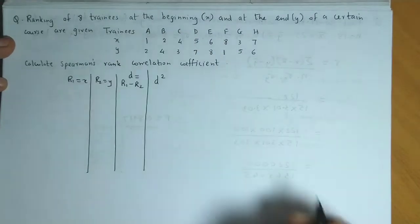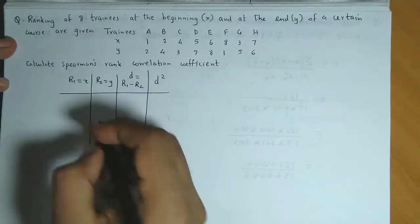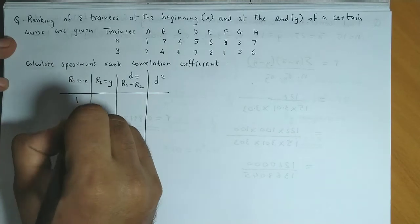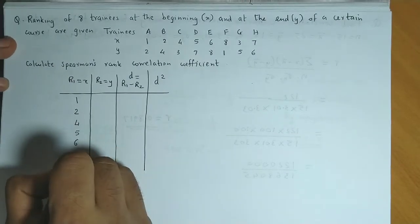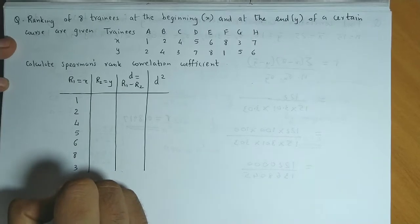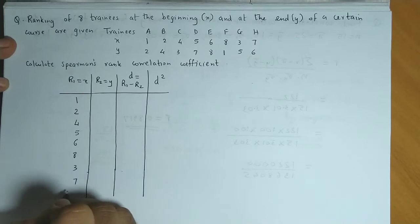So R1 minus R2, or you could also subtract R2 from R1, and finally we have D square. So the ranks given at the beginning are 1, 2, 4, 5, 6, 8, 3, 7. These are the ranks at the beginning.